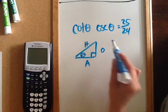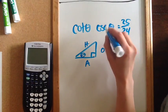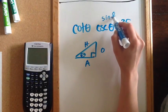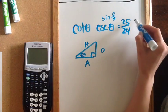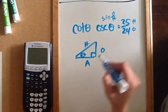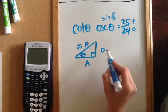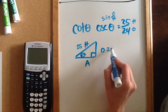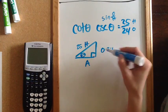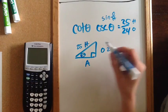Once I have that, I'm going to think about what the cosecant is. The cosecant is the reciprocal of sine. Sine is opposite over hypotenuse, which means cosecant is hypotenuse over opposite. So I now know this side is 25 and this side is 24, which means I can use the Pythagorean theorem to find the third side.